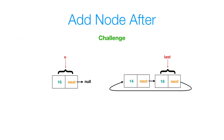Now I challenge you to add a node after a given node in the list. In this case I have a list with data 14 and 18, and I want to add the node with data 16 after the node with data 14. Give this a try and press play when you're ready to see the solution.